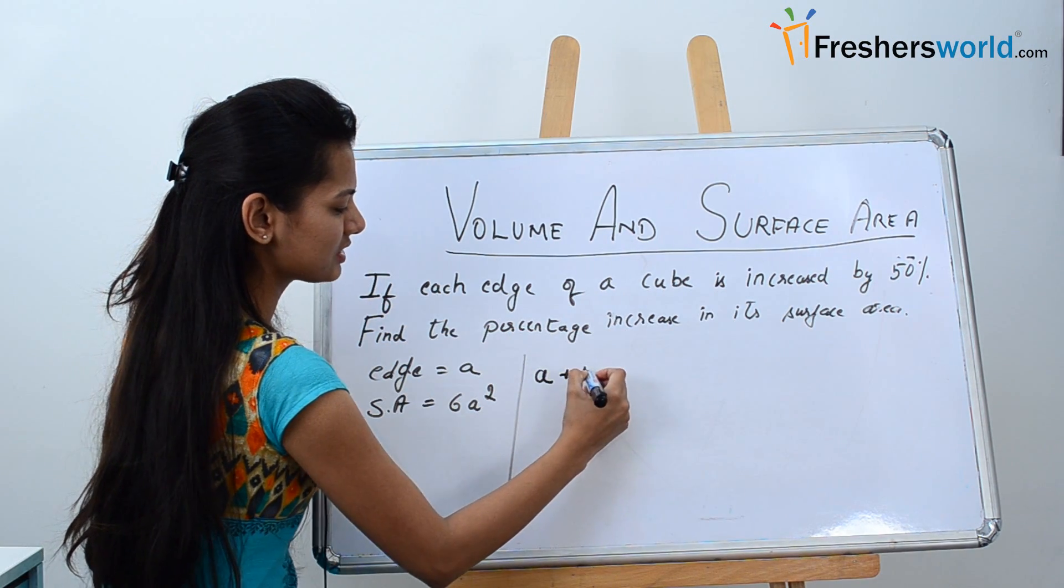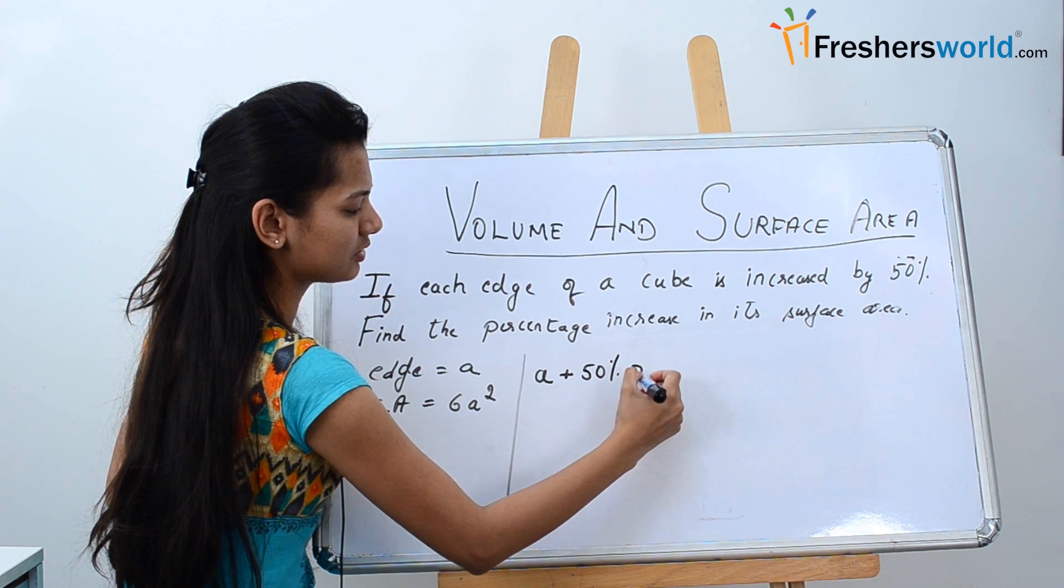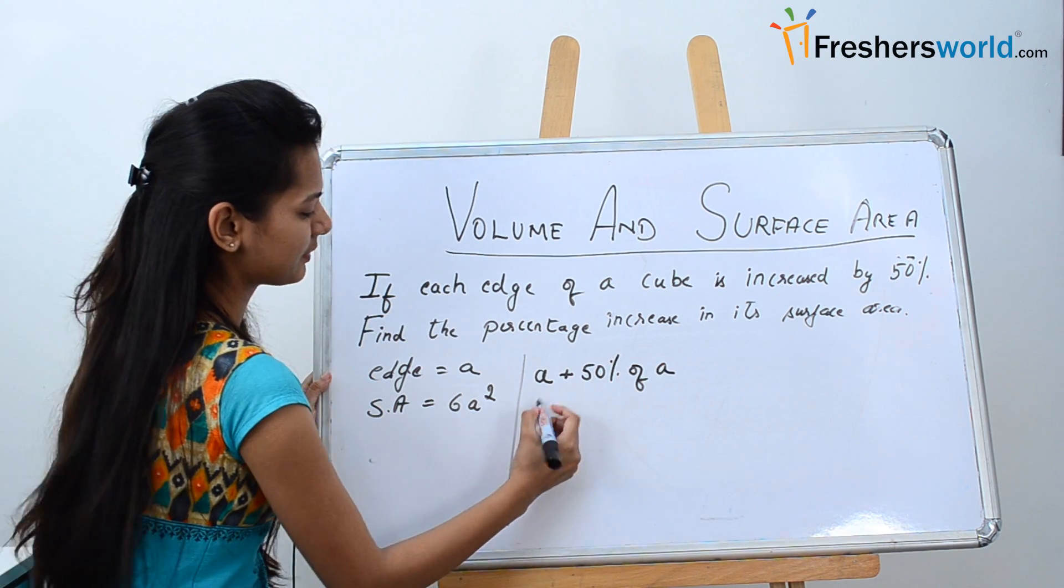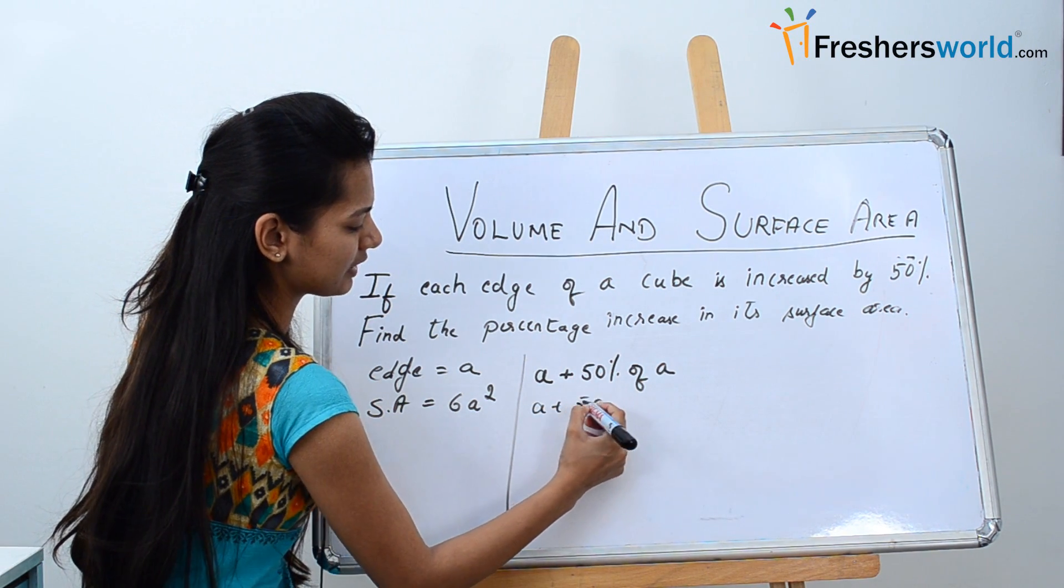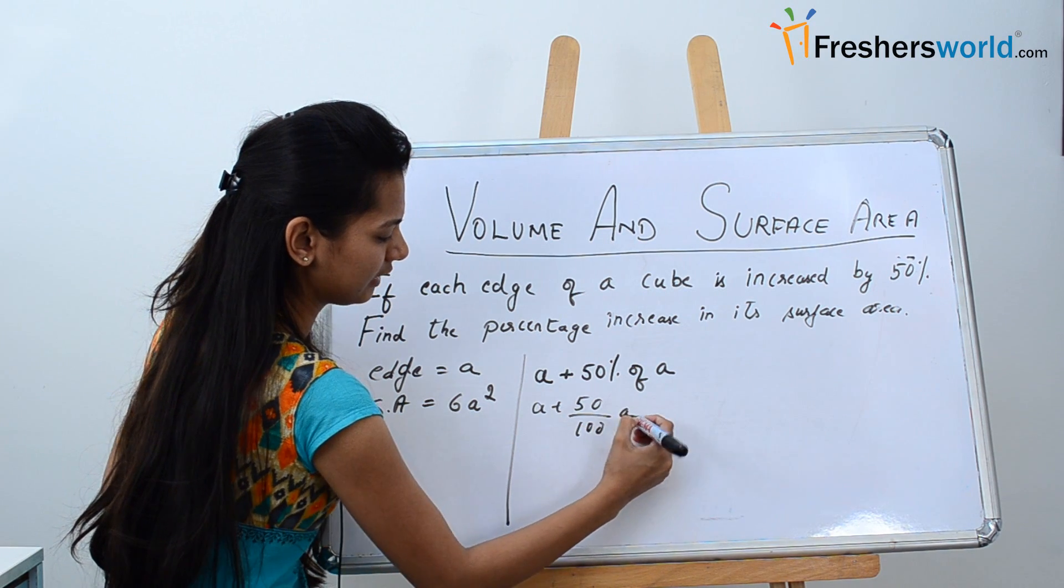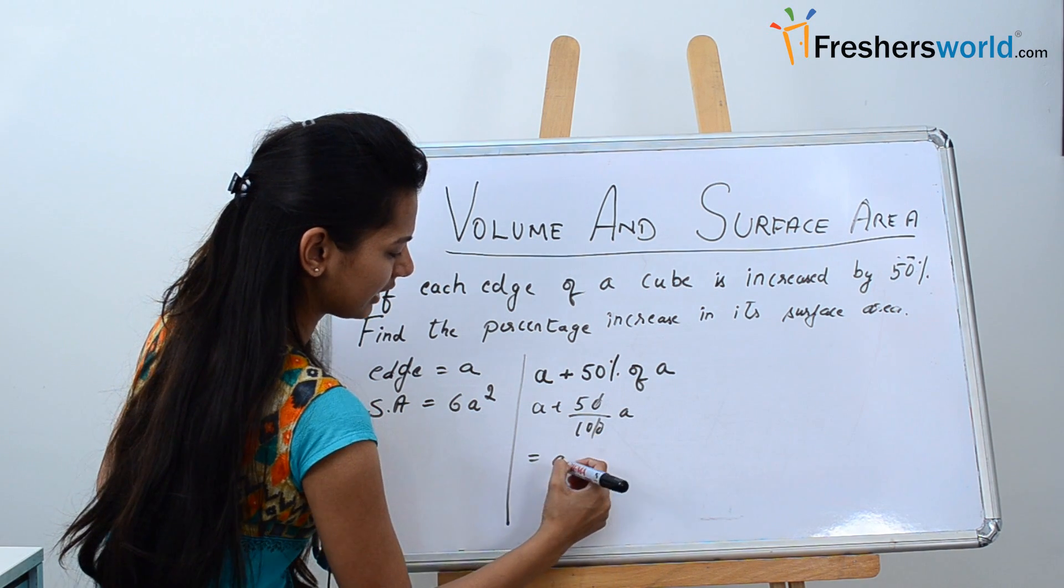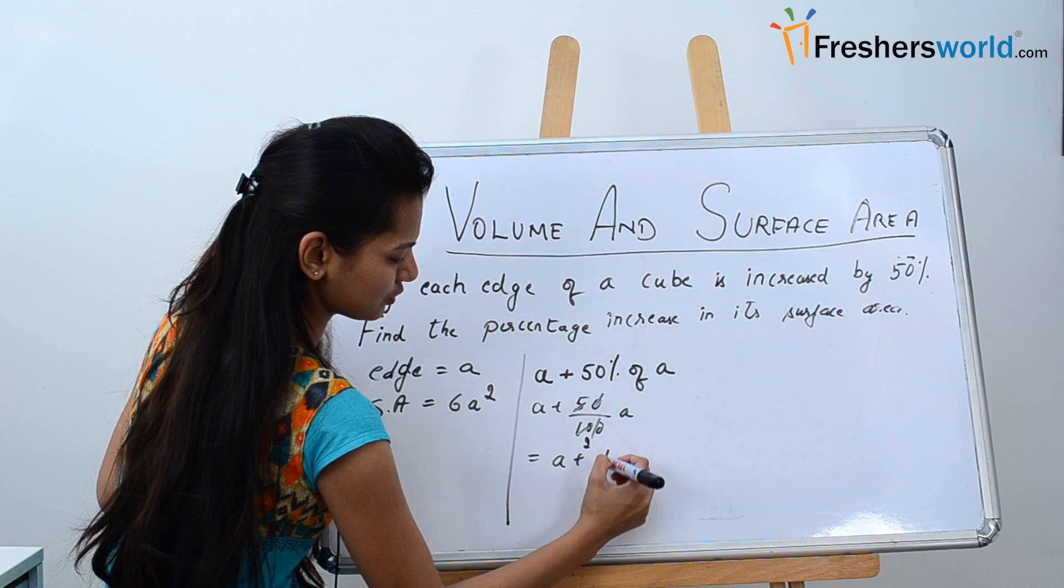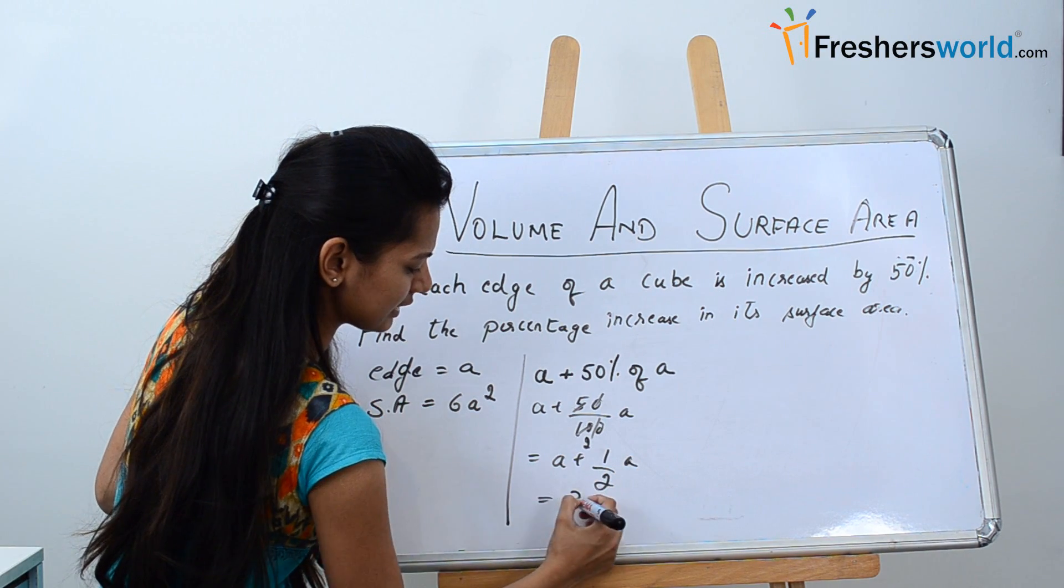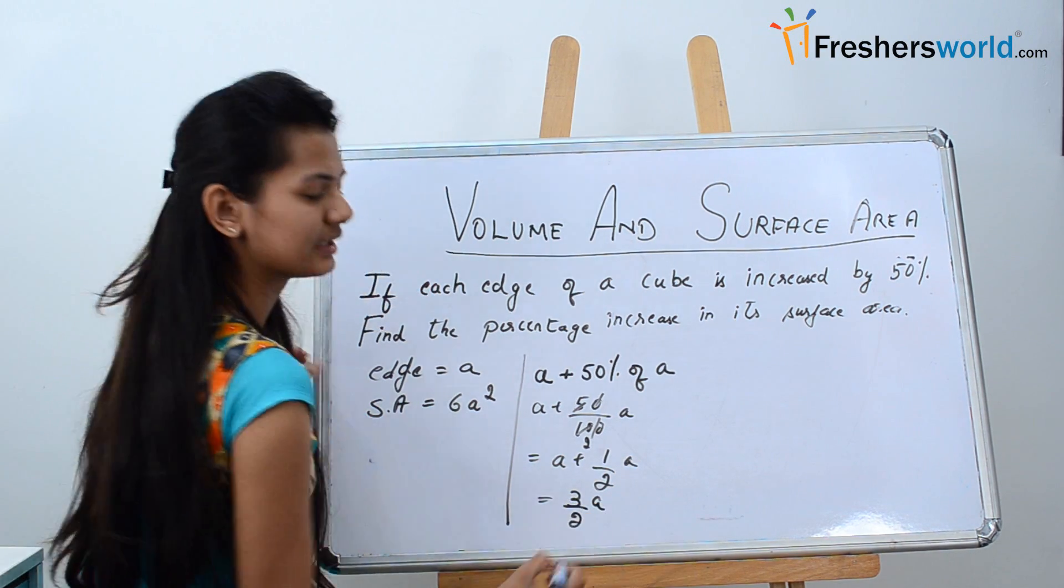It is increased by 50%. So that is a plus 50 by 100 a. That is equal to a plus one half a. That is 3 by 2 a. This is the new edge.